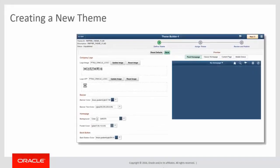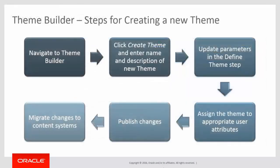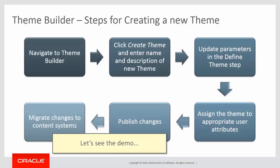Here are the steps for creating a new theme. First, navigate to ThemeBuilder using either of the methods described earlier. Then click the Create Theme button and enter a name and description for your new theme. At that point, update all the parameters you'd like — the colors, logos, and so on — in the Define Theme step. Then assign that theme to the appropriate users, typically through a role or a permission list. Finally, publish changes and propagate those across your cluster, with the option of migrating those changes to different content systems.